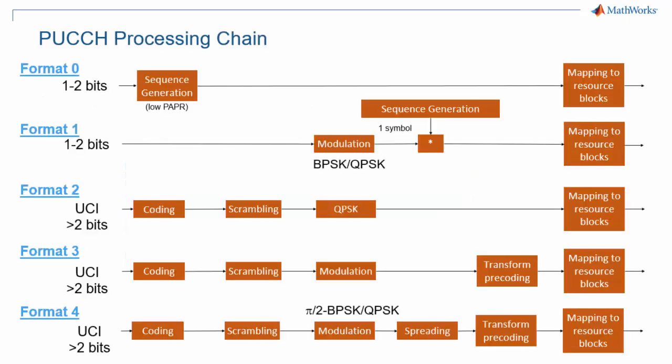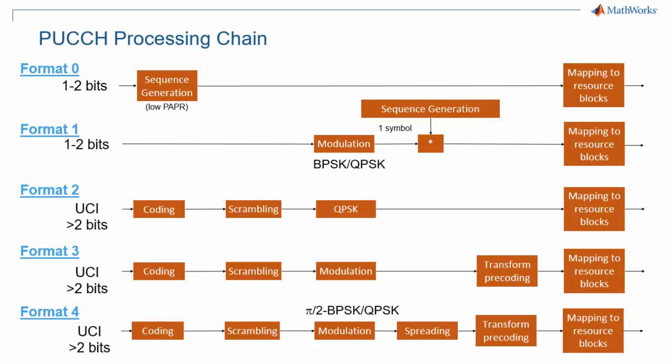This slide shows an overview of the PUCCH processing chain for different PUCCH formats. The chain is quite different for formats that support 1 or 2 bits — the first two formats — than for formats that support many bits. Those latter ones include coding and scrambling, whereas coding and randomization are handled by means of predefined sequences for the first two formats. The highest level modulation for any PUCCH is QPSK.